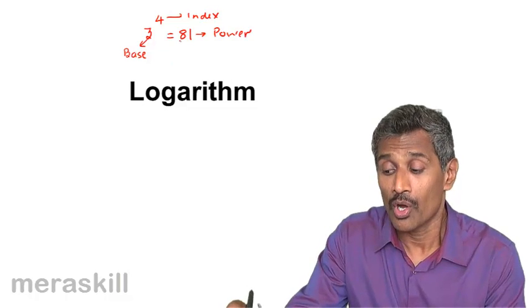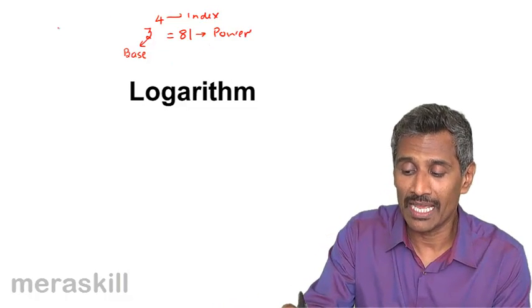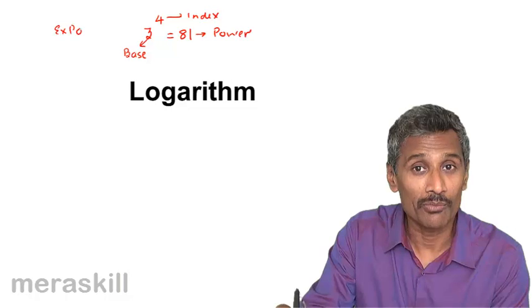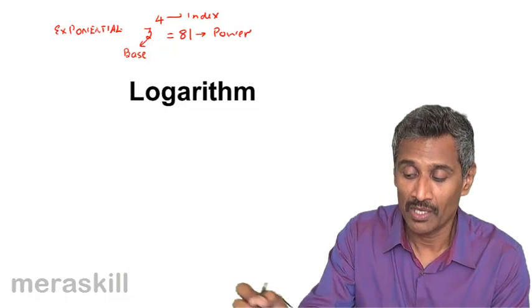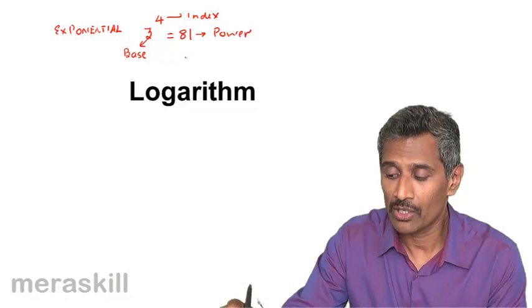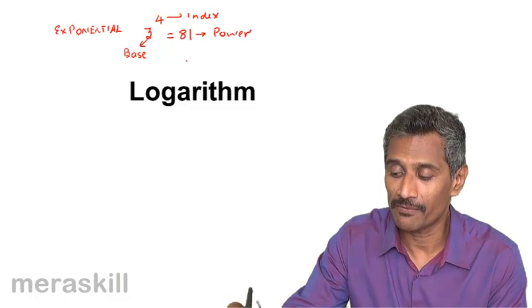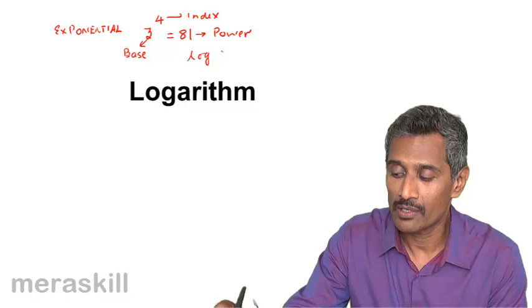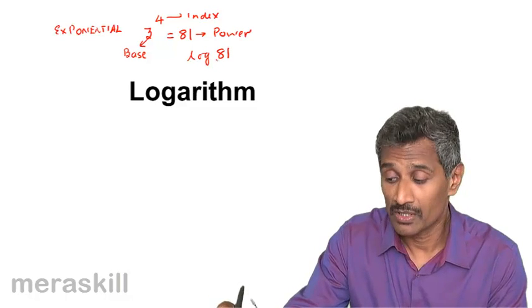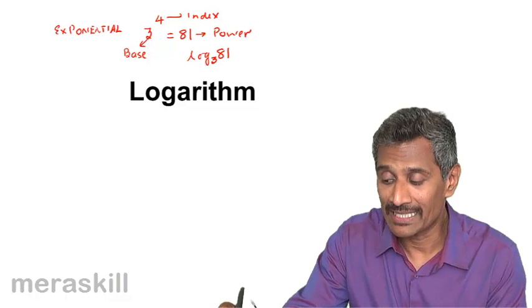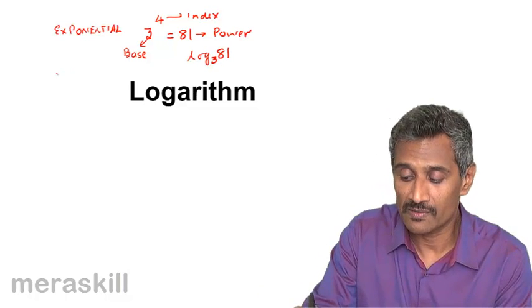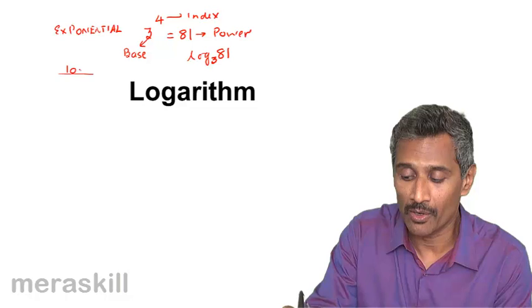This is called the exponential form of writing this expression. The same thing can also be written in logarithmic form as log 81 to the base 3. The 3 is written as a subscript: log₃81.